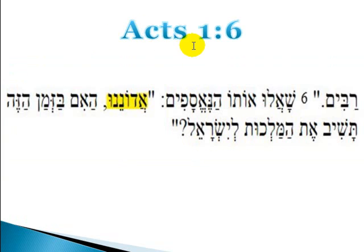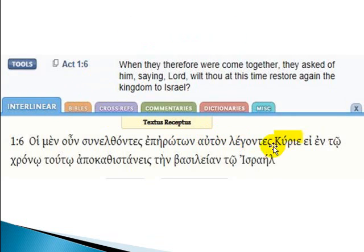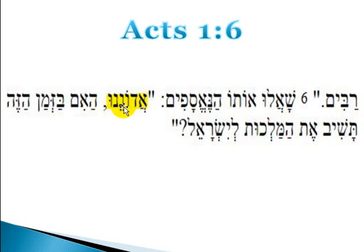The word Lord should be here because the disciples are speaking to Yahashiah. Now when you go to Acts 1:6 in the Hebrew, you have Adawan, which is the Hebrew word for Lord, and then Nawa, which is the Hebrew way of saying 'our' — our Lord, Adawan Nawa. So when you go back into Acts 1:6 and they put the word Kurios for Lord, as you see in the English also, they were correct, because in the Hebrew the word there is Adawan Nawa — our Lord.